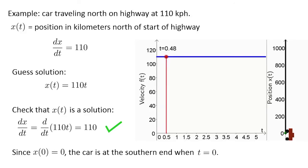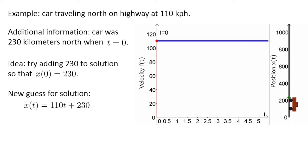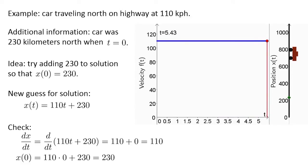For this solution, since x(0) is 0, the car is at the southern end of the highway when t equals 0. But that isn't the only possibility. What if we were told that the car was actually 230 kilometers north from the border when t equals 0? Clearly, x(t) equals 110t is not the correct solution. How can we fix our solution so that the car starts in the right place? Since we want x(0) to be 230, we could try adding 230 to our original solution. When we do that, we obtain a new guess for the solution: x(t) equals 110t plus 230. We better check to see if this really works. First we check if the derivative is correct. Since the derivative of the constant 230 is 0, adding 230 didn't change the derivative, and dx/dt is still 110 as required. Plugging in t equals 0, we verify that x(0) is 230 as required.